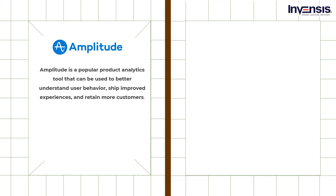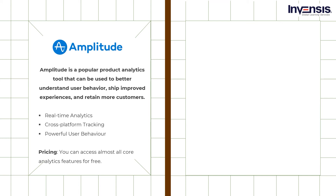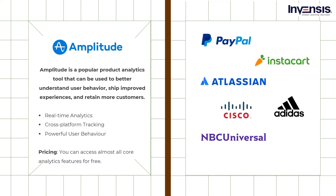Amplitude helps you answer questions critical to your product development strategy, such as how users are navigating through your application, which features engage them the most, or how to improve long-term user retention. It's the only analytics solution built to meet the needs of modern product and growth teams, with real-time analytics, cross-platform tracking, powerful user behavioral analytics, enterprise-level security, and customer support. It also comes with a full suite of APIs and integrations. You can access almost all core analytics features for free, though there is a monthly limit. Brands using Amplitude include Microsoft, PayPal, HubSpot, Autodesk, Booking.com, and Twitter.